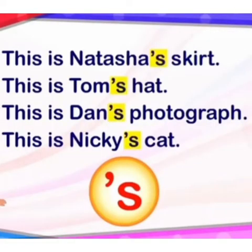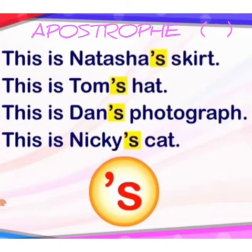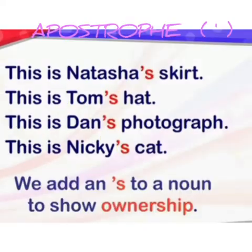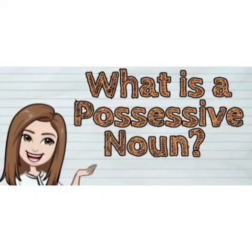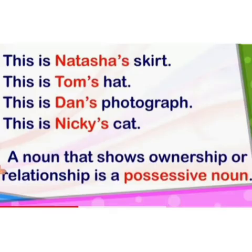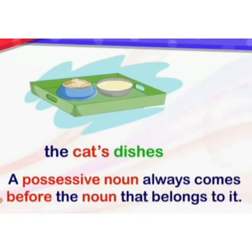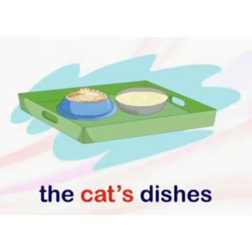Now have you noticed? An apostrophe S is added to a noun in all these sentences to show possession or ownership. This is called an apostrophe S. We add an apostrophe S to a noun to show ownership. So, what is a possessive noun? A noun that shows ownership or relationship is a possessive noun. A possessive noun always comes before the noun that belongs to it — for example, the cat's dishes, meaning the dishes belong to one cat.